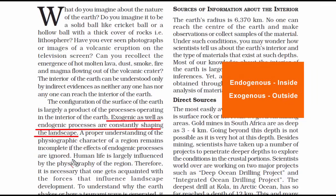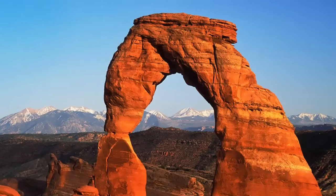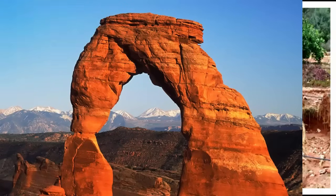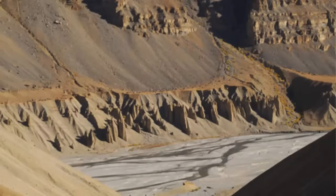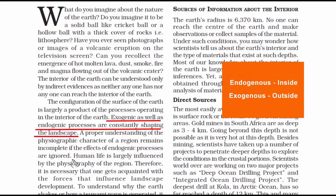Exogenous processes are those activities like weathering, erosion, transportation, deposition, and denudation — all these acts cause changes to the outer physical shape of a landscape.